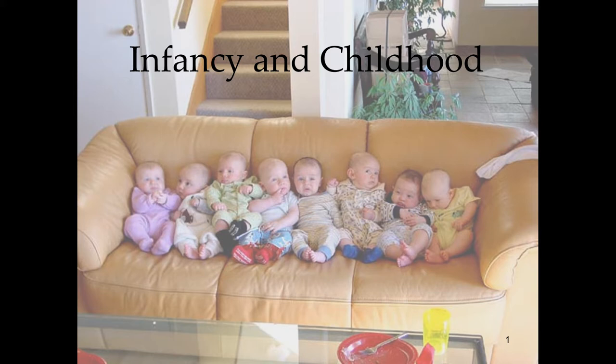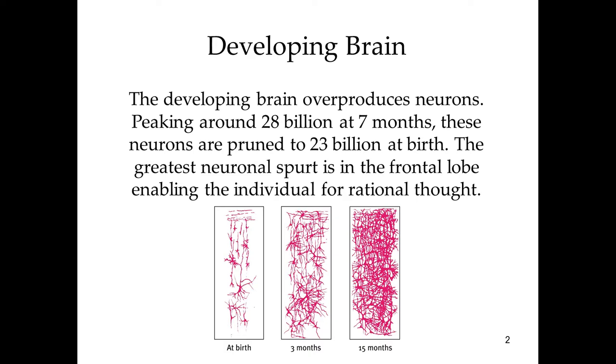Infant psychological development depends heavily on biological development, so to understand the emergence of motor skills and memory we have to understand how the brain develops. We talked about pruning in the lecture on neurons — let's learn a bit more about how this process happens.